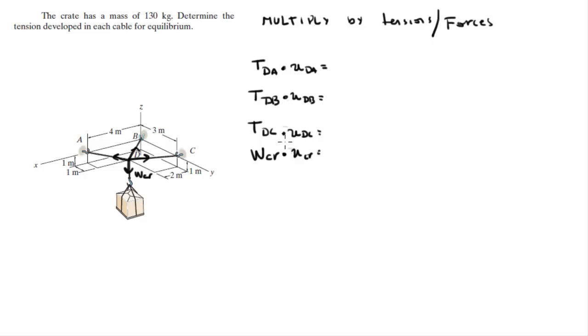When you do so, you should get the Cartesian vector form of each of these forces or tensions. So the first one will be 0.816 TDA in the i, minus 0.408 TDA in the j, plus 0.408 TDA in the k.